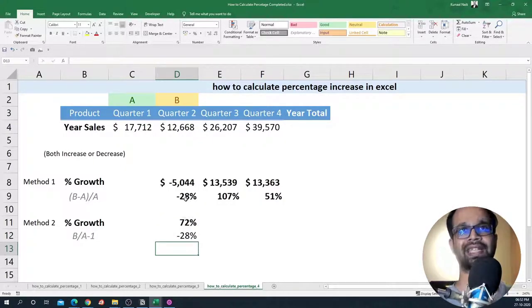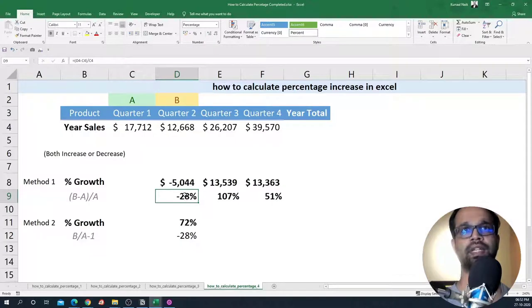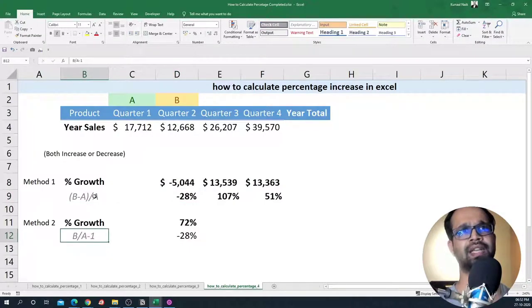So if I do this, I get the same 28 percent that we initially saw in the first formula and if you know a bit of algebra, you will notice that both of these formulas are the same.